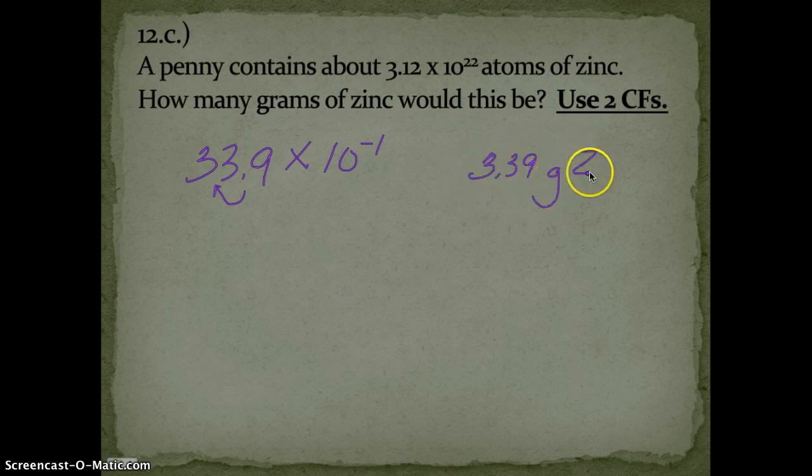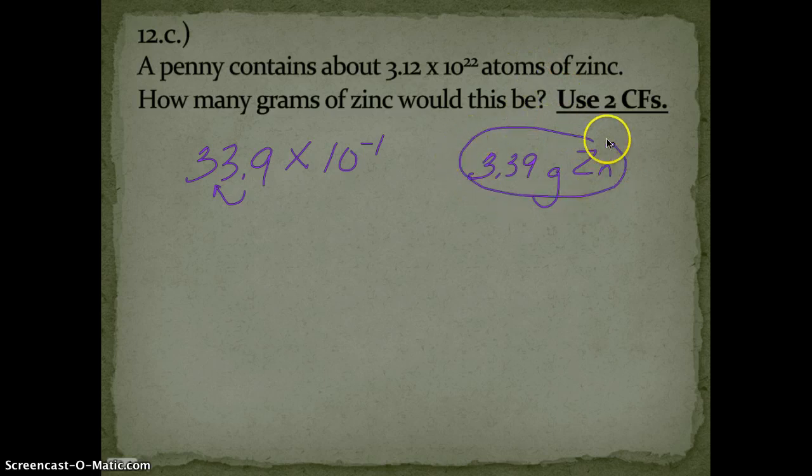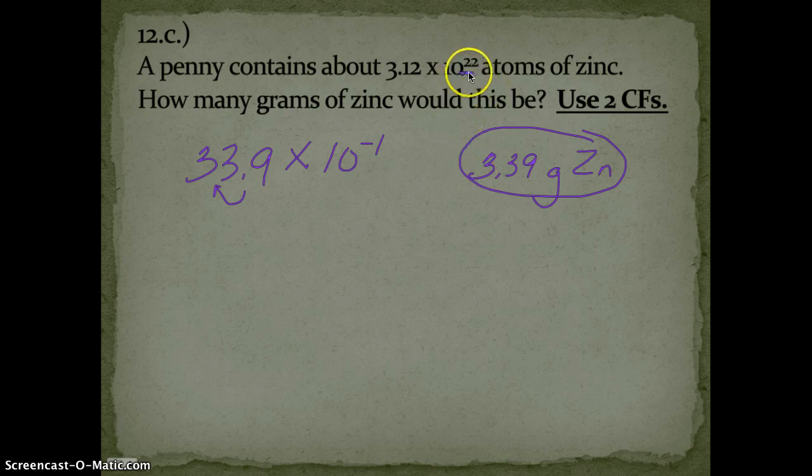You want to think about this answer. This is by far much less than the 65.4 grams per mole for one mole of zinc. And this right here is not times 10 to the 23rd as Avogadro's number—it's less, so this answer would agree. Always think about your answer so you don't make silly mistakes.